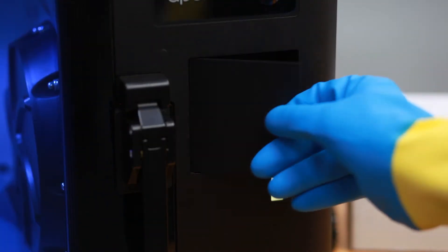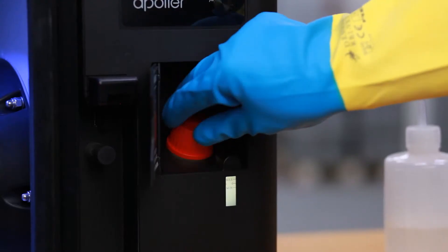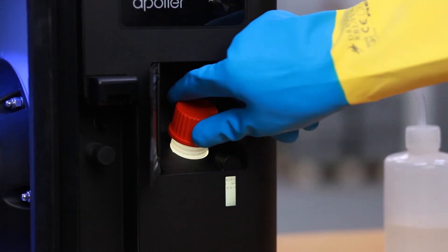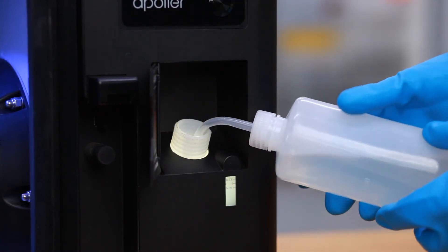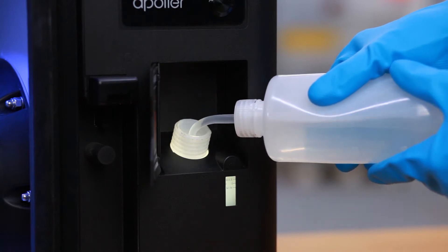Open the filler cover and unscrew the filler cap. Pour solvent into the wash bottle from the starter kit. Fill the tank with liquid up to the line marked with arrows.